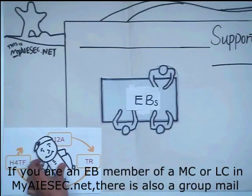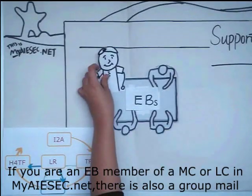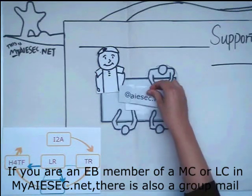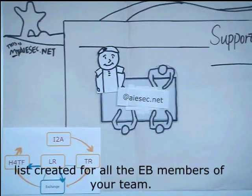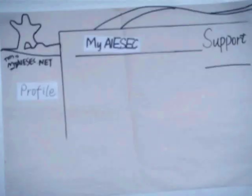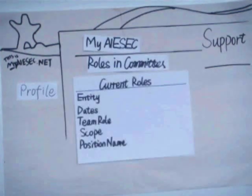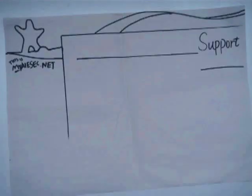If you are an EB member of an MC or LC in myISEC.net, there is also a group mail list created for the EB members of your team. Go to Profile, select myISEC, and select Roles in Committee. Then you could see the mail list under your current roles.